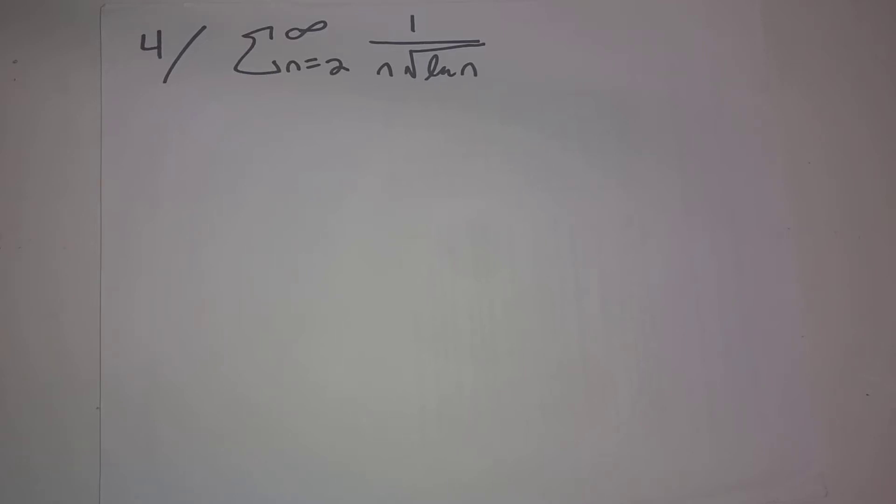Problem number four, determine convergence or divergence of the sum from n equals 2 to infinity of 1 over n times the square root of natural log of n. So how to do this problem?